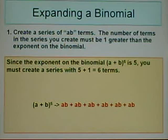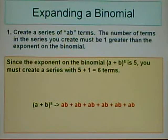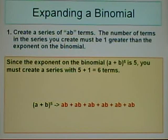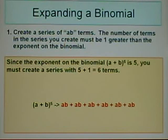Step 1: Create a series of AB terms. The number of terms in the series must be one greater than the exponent on the binomial. Since the exponent on the binomial A plus B raised to the fifth is 5, you must create a series with 5 plus 1 equals 6 terms. So at the bottom here, we have expanded the quantity A plus B raised to the fifth and created six terms for A and B.